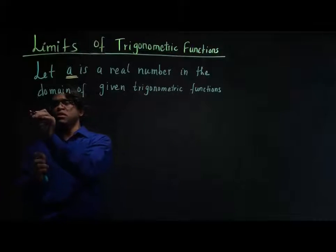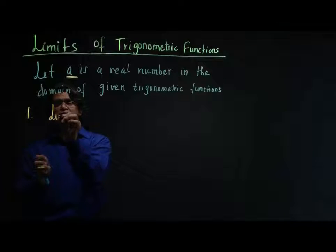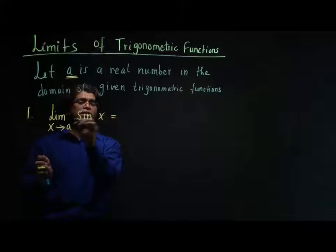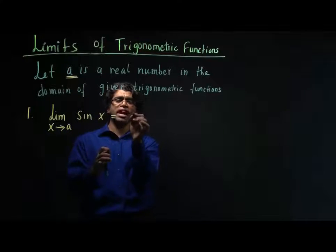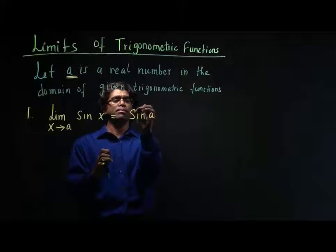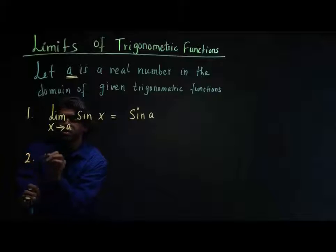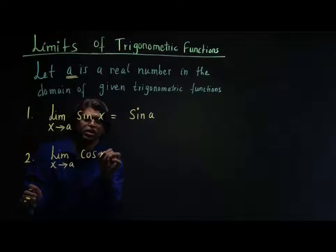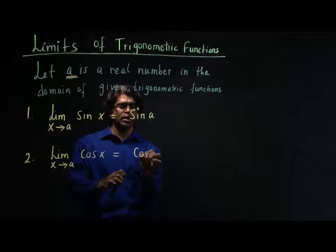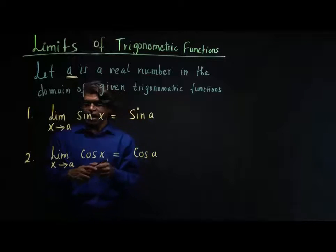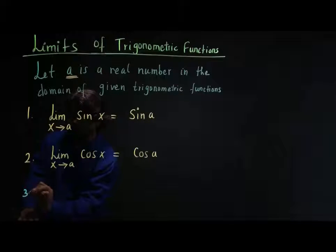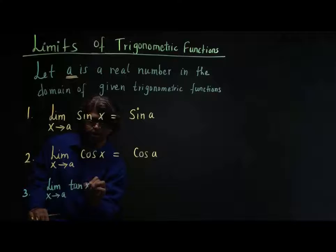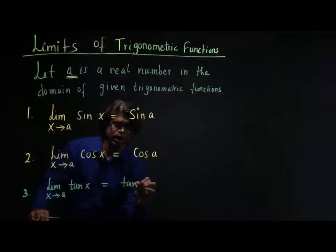Let's consider our first trigonometric function. My first trigonometric function is: limit as x tends to a of sine x equals sine of a. My second trigonometric function is: limit as x tends to a of cosine x equals cosine of a. And my third trigonometric function is: limit as x tends to a of tangent x equals tangent of a.